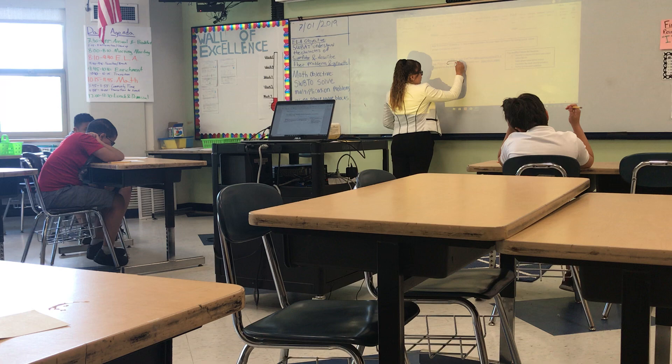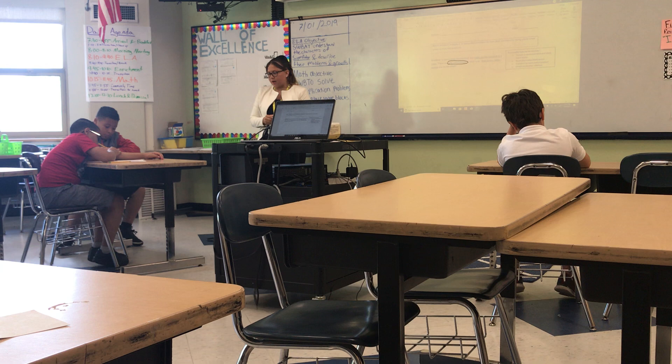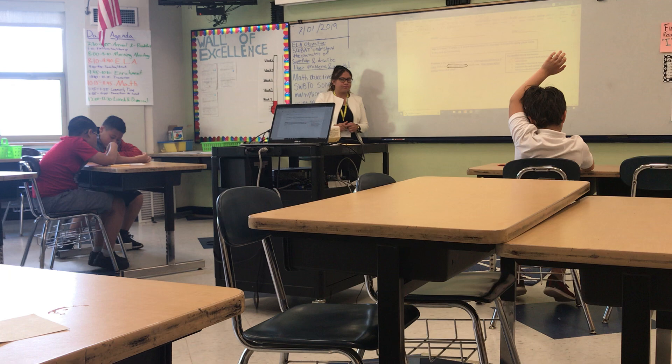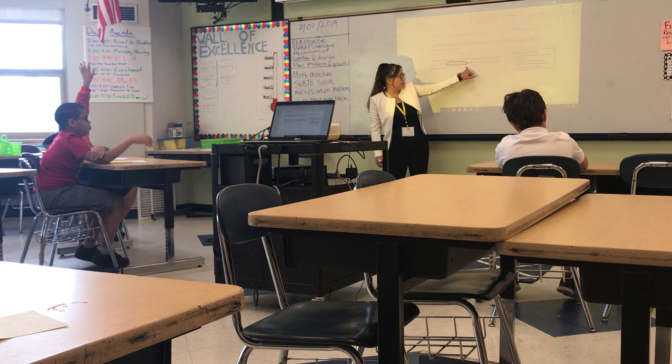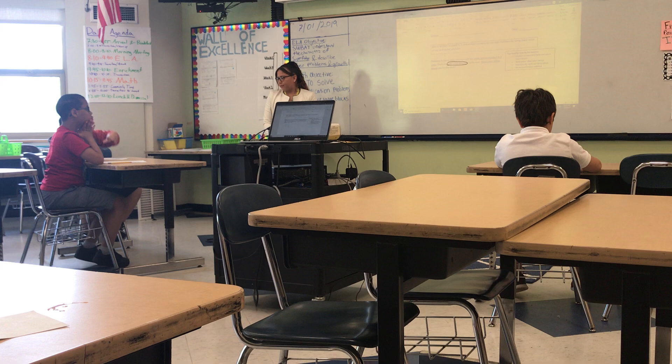And what's the other important number we're talking about in this problem? I'm going to read it one more time. A GameStop display shelf has video games stacked in three rows. Make sure you're listening. There are 246 video games in each row. How many video games are on the shelf? What's the other important number, Hector? Three. Great job. Awesome job, Hector. Three.